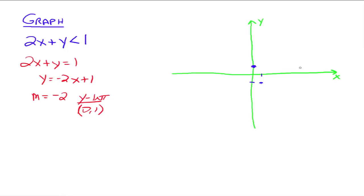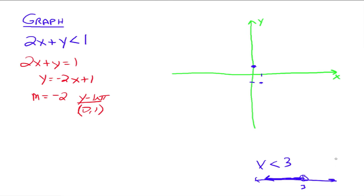Before we connect the dots, I want to make a point. The previous example had greater than or equal to, but this one has strictly less than — there's no 'or equal to.' Just like when we graphed inequalities on a number line and used an open circle to show a number isn't included, here we make our line dashed. A dashed line means the points on the line itself are not included.